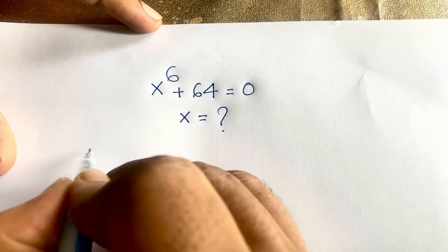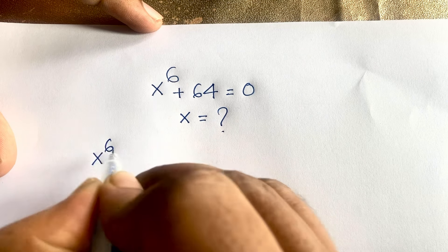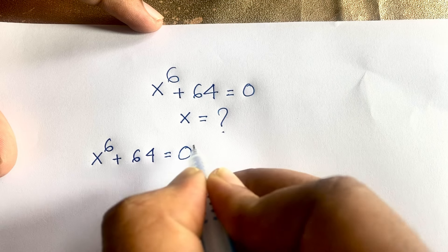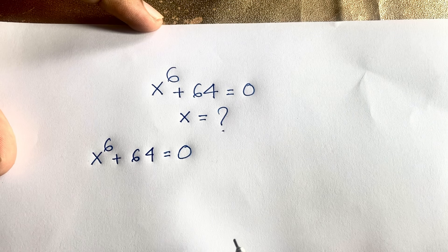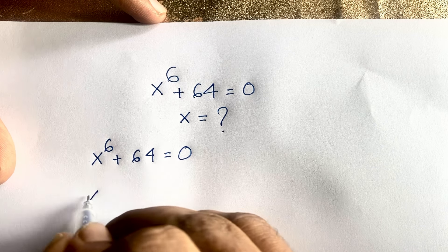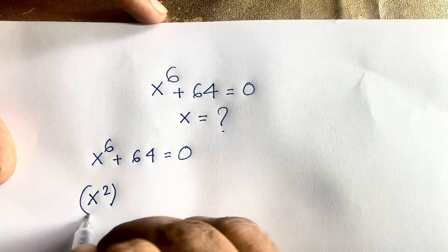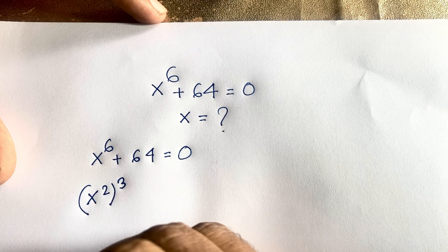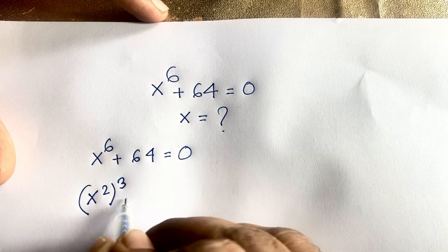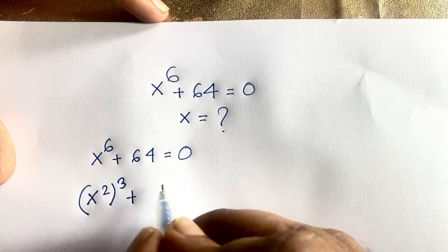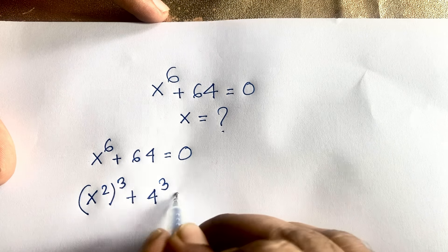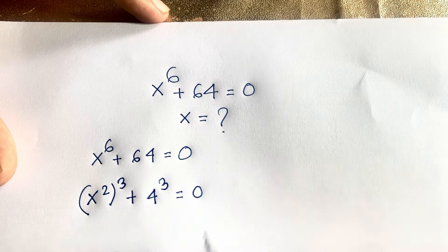Our question is x to the power 6 plus 64 is equal to 0. This x to the power 6 can be written as x squared, whole to the power 3. According to exponential laws, 2 times 3 gives 6. And 64 can be written as 4 to the power 3. So we have x squared, whole cubed, plus 4 cubed, equals 0.